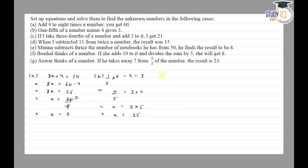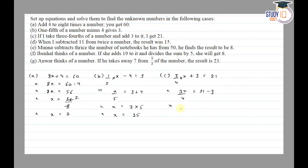Then part c: if I take 3/4th of a number and add 3 to it, I get 21. So the equation is: 3/4 of x plus 3 is equal to 21. So 3x by 4 is equal to 21 minus 3, which is equal to 18.